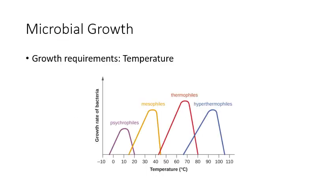Another growth requirement is temperature. Each microbe, just like you, has a temperature it prefers to live at. If they like cold environments, we call them psychrophiles. If they prefer moderate temperatures, those are mesophiles. If they like high temperatures, those are thermophiles. And if they like ridiculously high temperatures, those are hyperthermophiles — meaning really, really high temperatures. In fact, some of these are living even above the boiling point and can still survive after being boiled.